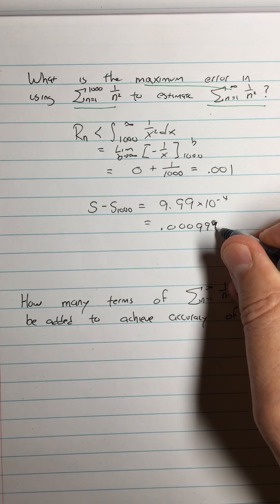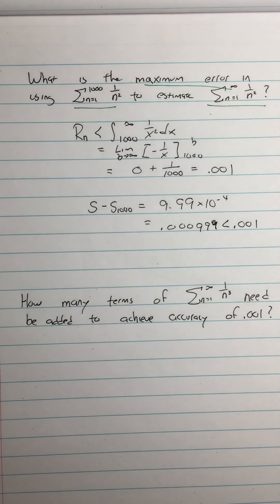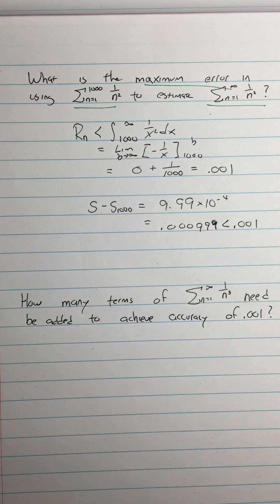9.99 times 10 to the negative 4th. What's that? That equals 0.000999. I guess there's a... yeah, no, there's three nines. And that is, in fact, less than 0.001. Amazingly, it's barely less than that, but it's saying that we couldn't have had more error than that. So that's the sort of idea.